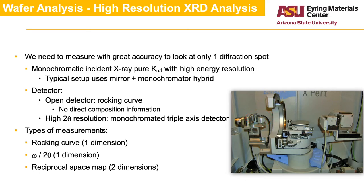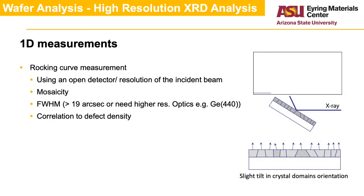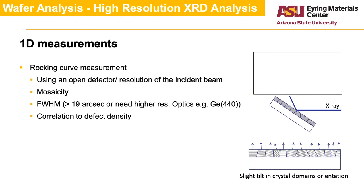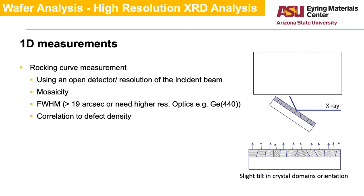The types of measurements are rocking curve, omega-theta, and reciprocal space maps. The rocking curve measurement is done by rocking the sample — varying the incidence angle onto the sample while maintaining the detector at a fixed angle. This provides information about the mosaicity of the sample, which is the spread in crystallite orientation. The narrower the peak, the more perfect the crystal is. The broader the peak, the less perfect the film is. The peak width can also be correlated with the film's defect density.